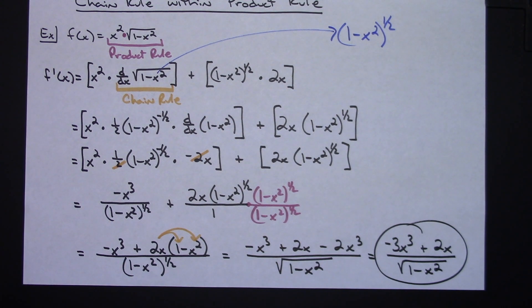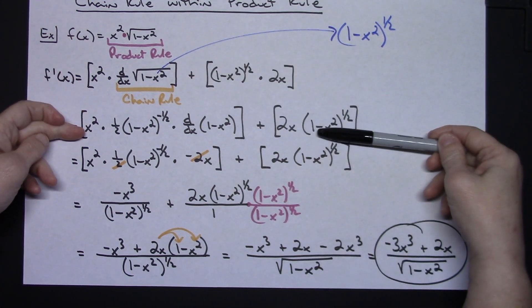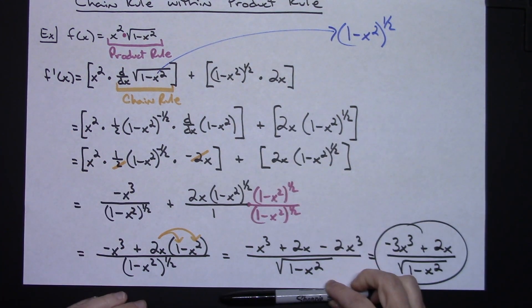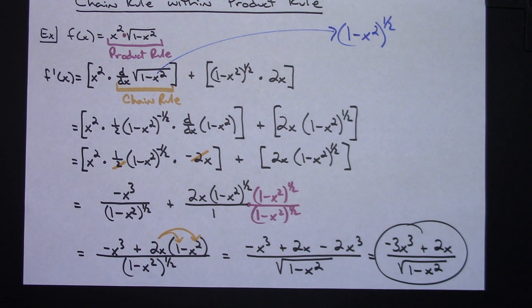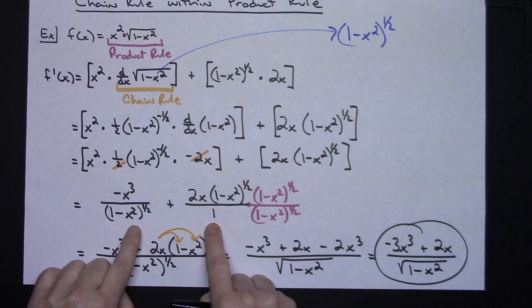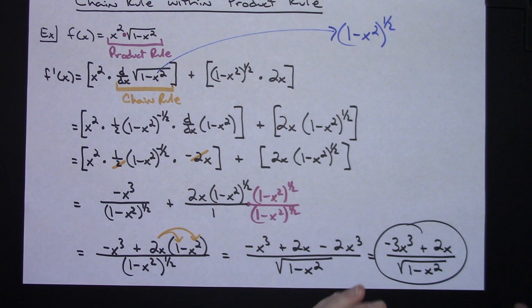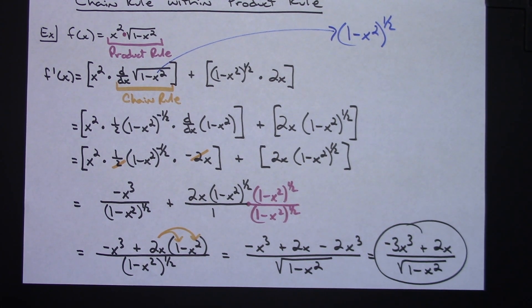As soon as chain rule is combined with product rule or quotient rule, problems become quite long. In reality, I did product rule and chain rule, but after that everything else was just algebra — so you have to be strong with algebraic simplification. Most college professors will require you to get common denominators and arrive at a single simplified expression. Thanks for watching — if the videos are helping, please share with your friends and don't forget to subscribe to the channel.